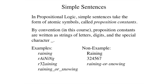For example, raining spelled as shown here is a proposition constant, as are rAiNiNg spelled with lower and uppercase letters but beginning with a lowercase letter, r32aining, and raining_or_snowing.